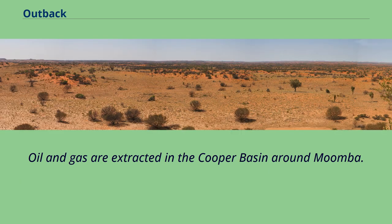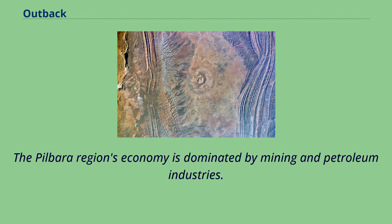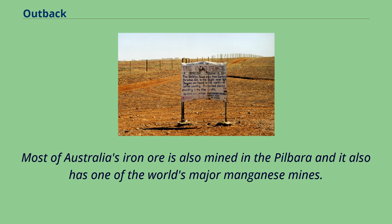Oil and gas are extracted in the Cooper Basin around Moomba. In Western Australia, the Argyle Diamond Mine in the Kimberley is the world's biggest producer of natural diamonds and contributes approximately one-third of the world's natural supply. The Pilbara region's economy is dominated by mining and petroleum industries, and most of Australia's iron ore is also mined in the Pilbara, which also has one of the world's major manganese mines.